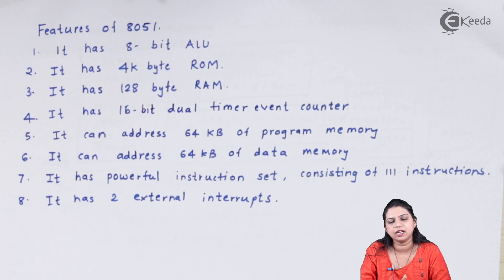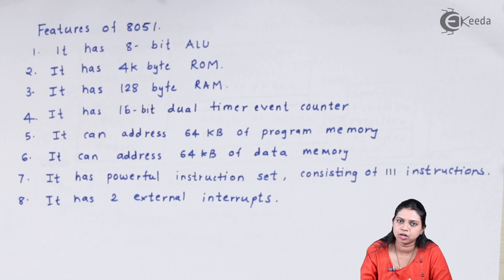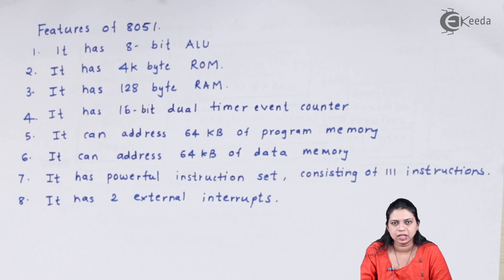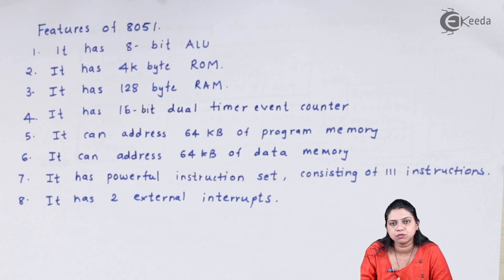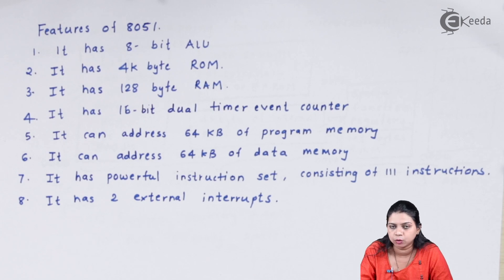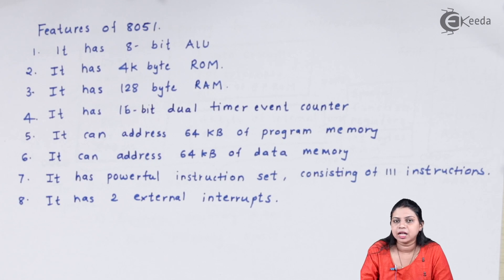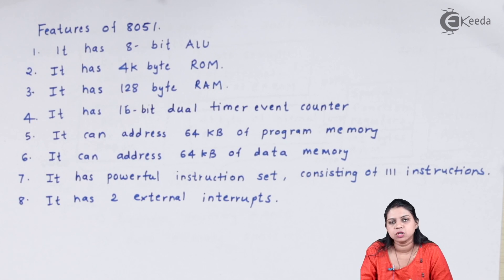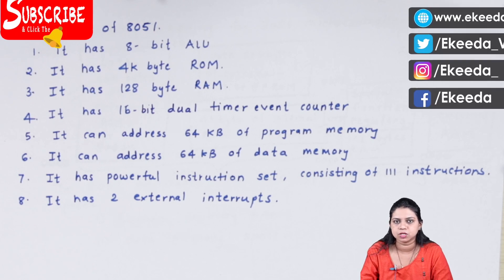The instruction set is something we have already studied in microprocessors. Similarly, the 8051 microcontroller has an instruction set of around 111 instructions, and it has two external interrupts. So these are the eight features of the 8051 microcontroller: 8-bit ALU, 4 KB ROM, 128 bytes RAM, 16-bit dual timer/event counter, addressable up to 64 KB of program and data memory, a powerful 111-instruction set, and two external interrupts.